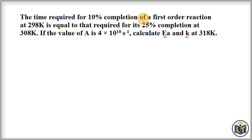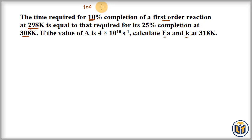The problem says that the time required for 10% completion of a first order reaction at 298 K is equal to that required for its 25% completion at 308 K. For the first condition, initial amount is 100 and remaining amount after 10% completion is 100 minus 10 = 90.